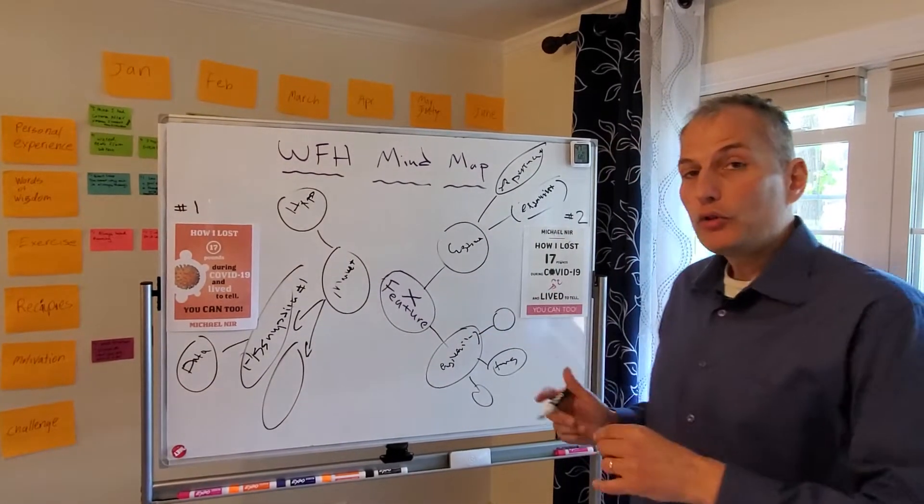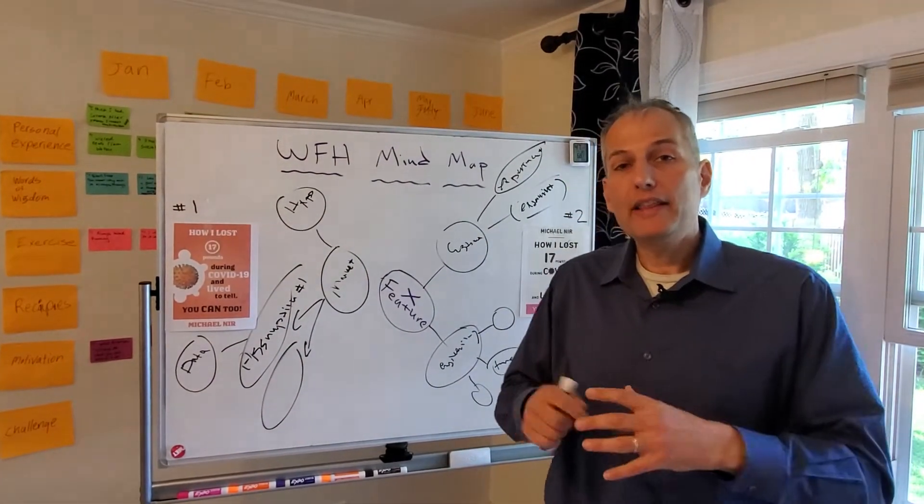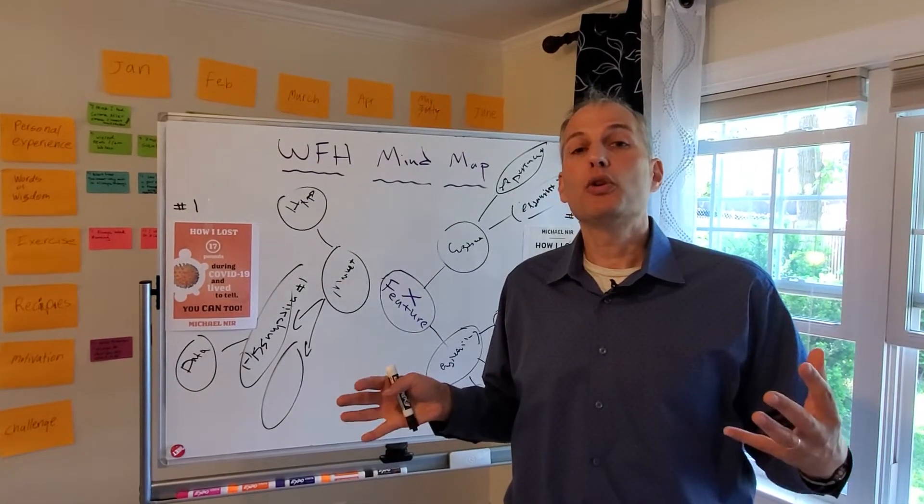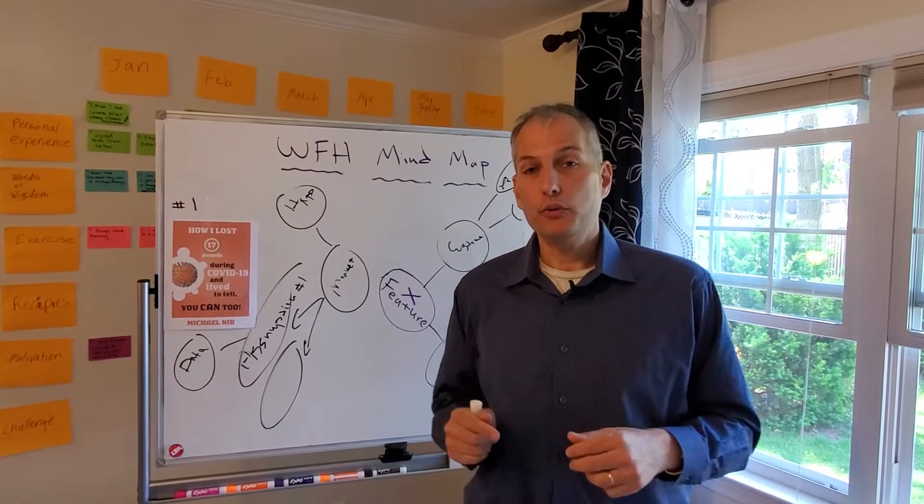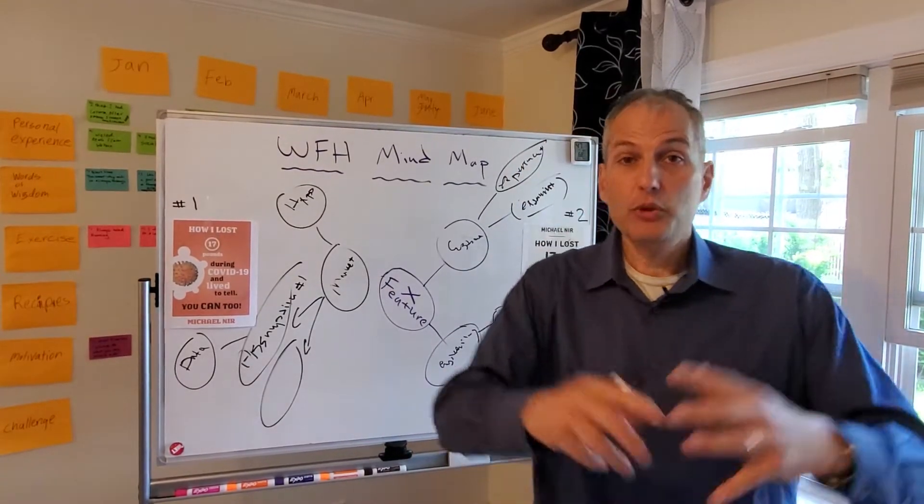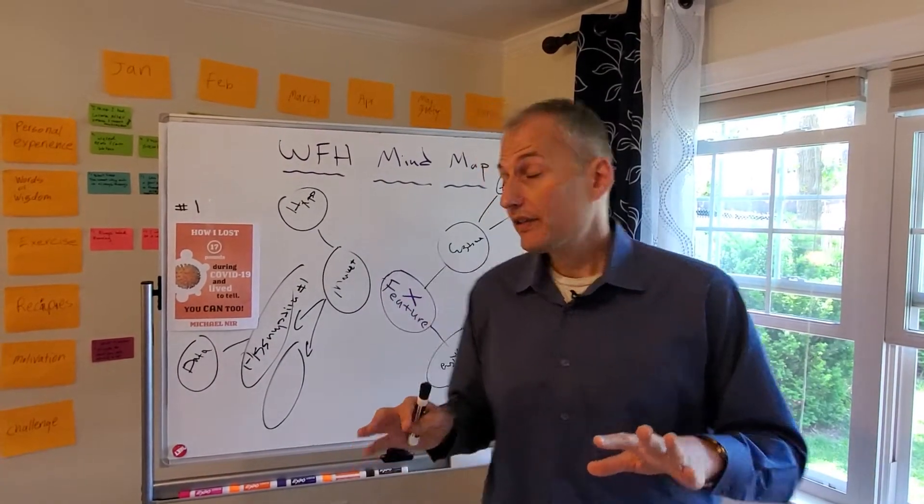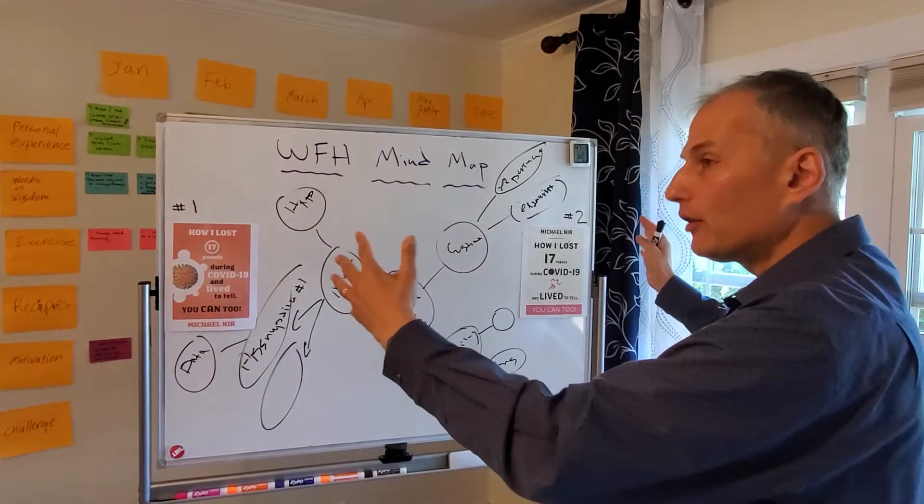So this is a mind map done remotely. And we want to recreate the interaction that would normally occur when there is a facilitator in the room working through. The only way to do that is to unmute everybody. That's my first tip. And the second one is put it on a real board.